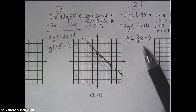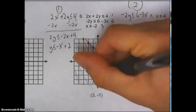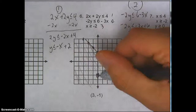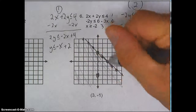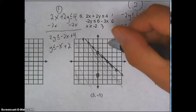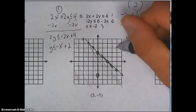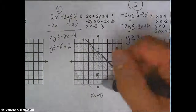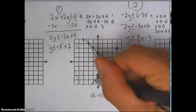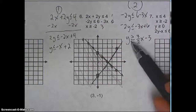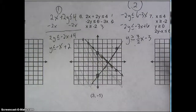For the other line — 3/2x minus 3 — y-intercept at negative 3: 1, 2, 3. Then slope 3 over 2: up 1, 2, 3, over 1, 2. It's the same point — up 1, 2, 3, over 1, 2. It's a solid line, and I'm going to shade everything above it because y is greater than.